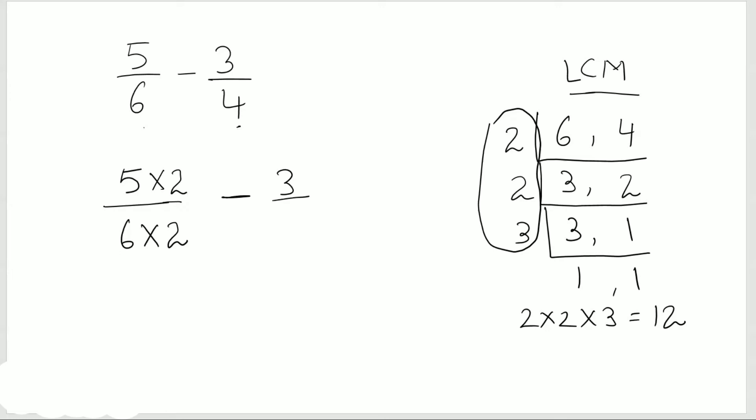Minus 3 over 4. 4 times 3 is 12, so I need to multiply by 3. Now what do I get? I get 10 over 12 minus 9 over 12.